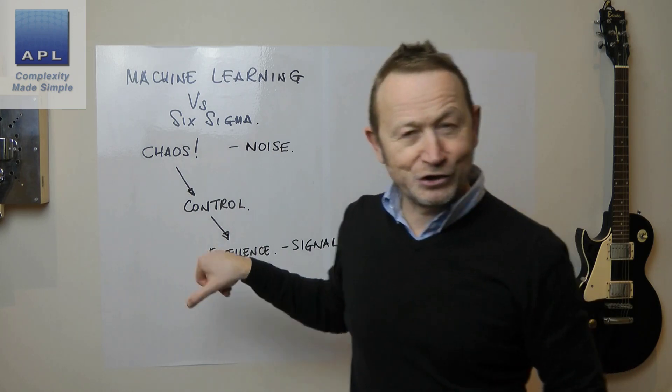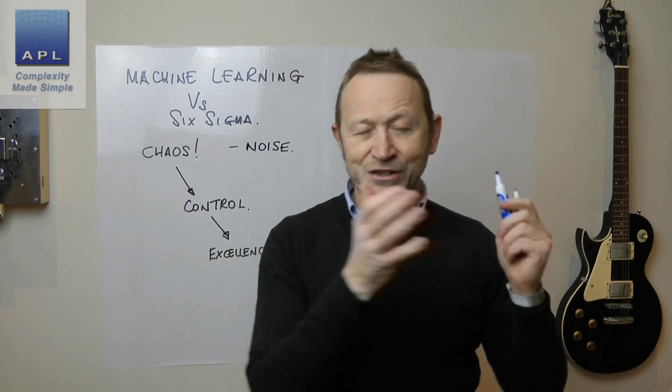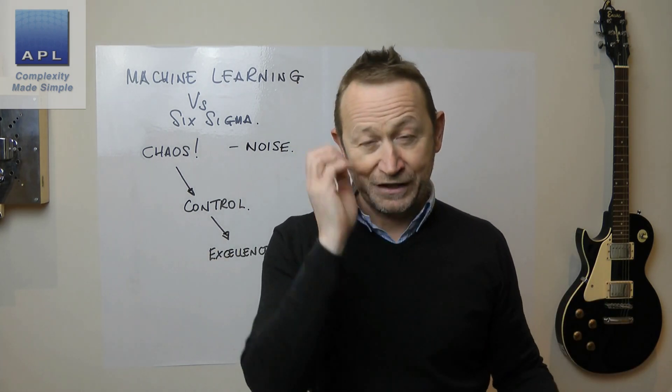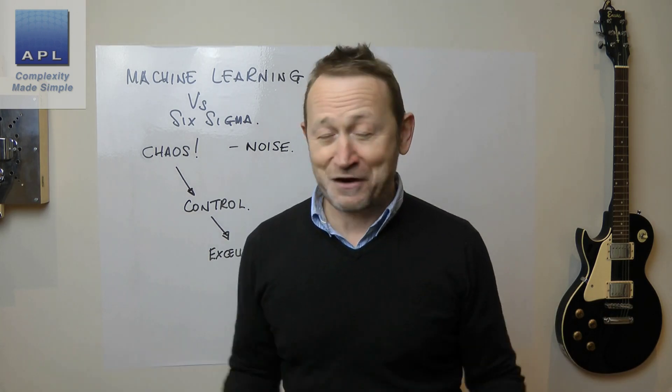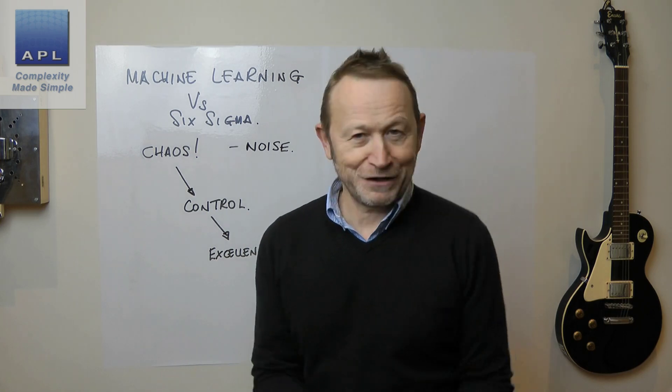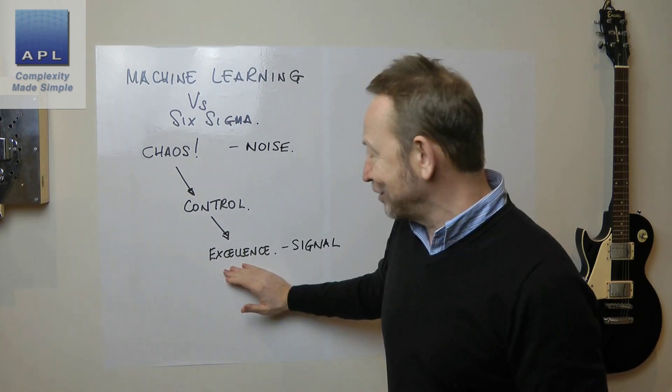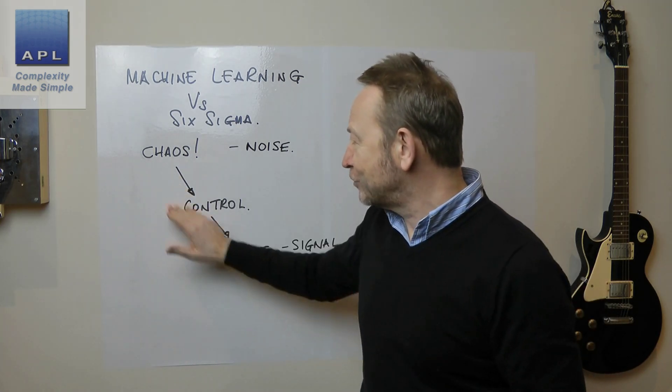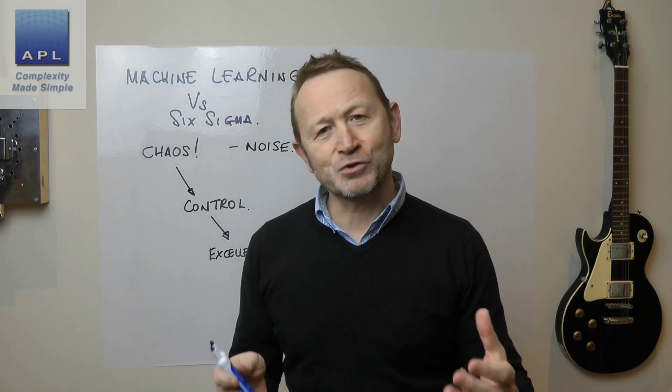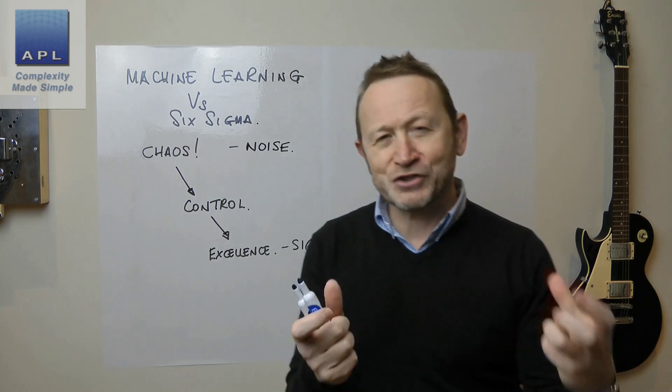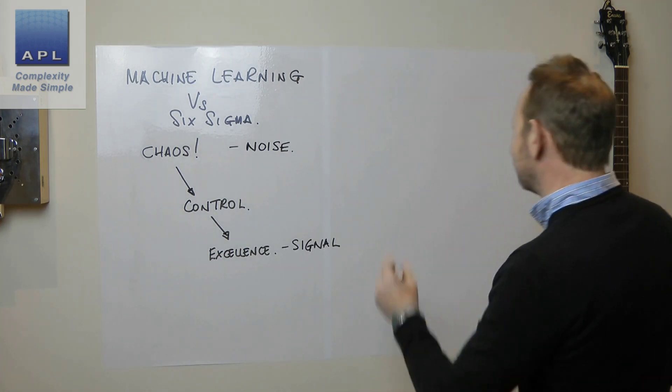For me, this is where machine learning sits. It sits in the excellence phase. But actually, the excellence phase is very easy to do. You don't need fancy computers to do the excellence phase. What's really hard to do is to go from chaos to control. So, let me just put this in a graphical form to explain what I'm talking about.